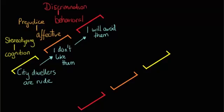So as we can see here, the difference between stereotyping, prejudice, and discrimination is one of cognition, affect, and behavior.